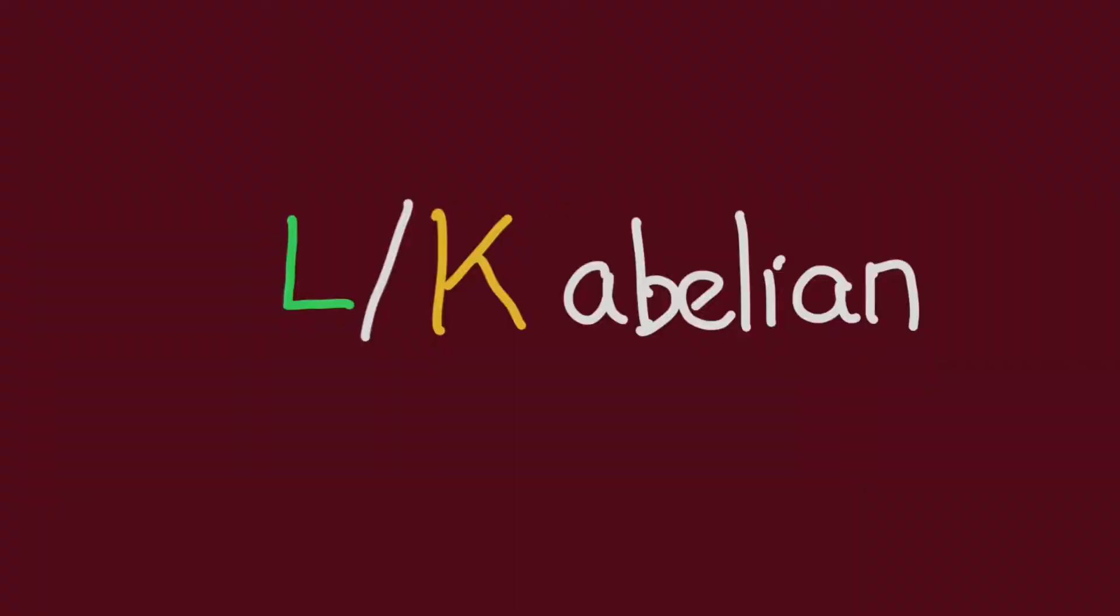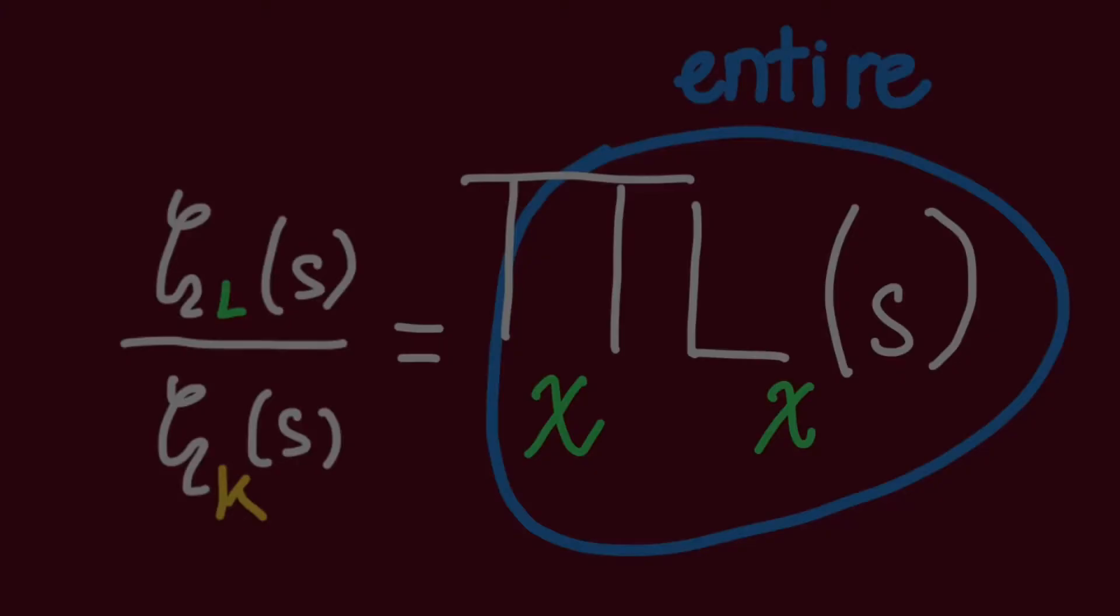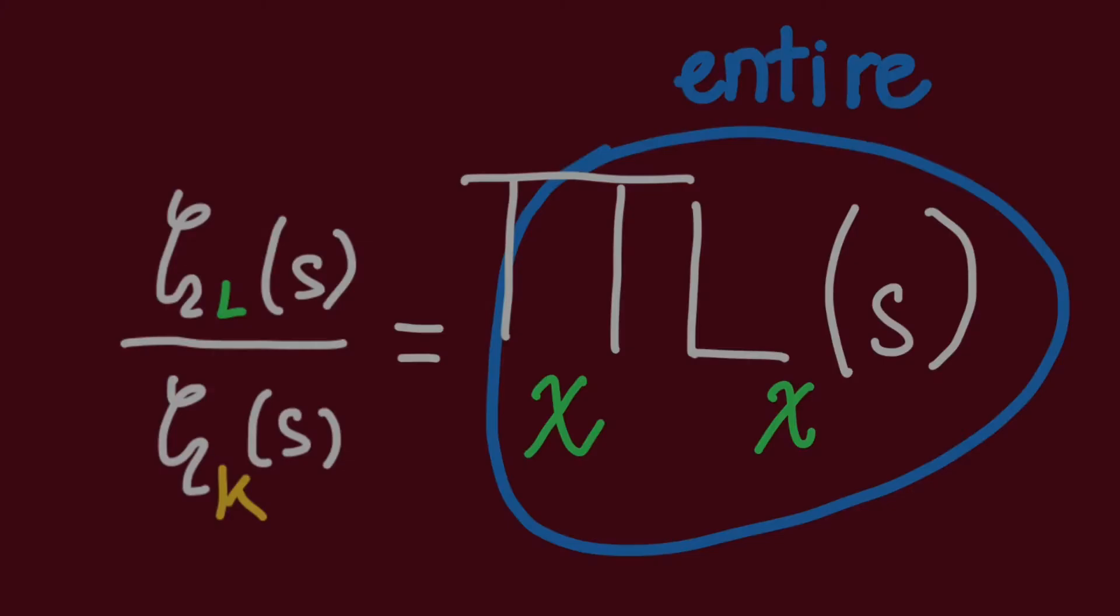Now, in the special case when L over K is abelian, then we immediately know that this quotient must be entire. The reason is because we can write this quotient as a product of Weber's L functions for non-trivial characters. And such L functions are always going to be entire.